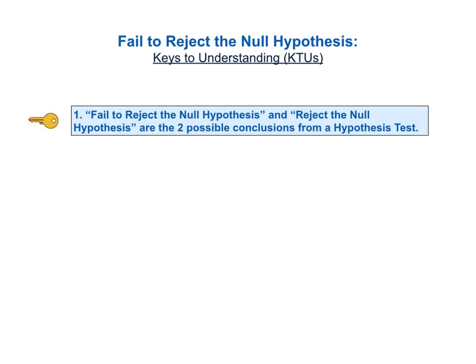As usual in the book and in these videos, we'll start out with a list of keys to understanding, or KTUs, so that you can see on one page the most important things to understand about the concept. There are three keys to understanding for the concept of fail to reject the null hypothesis.